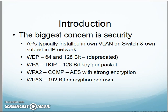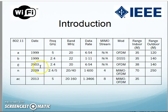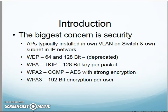They also mention that wireless is limited in speed, hard to manage, subject to interference, and expensive. On the speed side, more recently MIMO has made wireless bandwidth much greater and more beneficial. Looking back at the standards, data rates used to be in the 50 Mbps ballpark — sometimes about half that due to range and distance. With modern wireless standards, we're now pushing into the hundreds of megabits and even into some basic gigabit ranges.